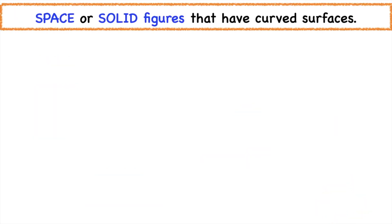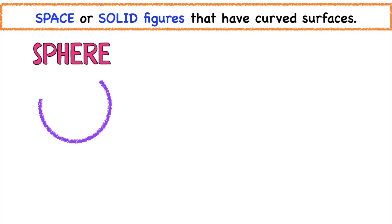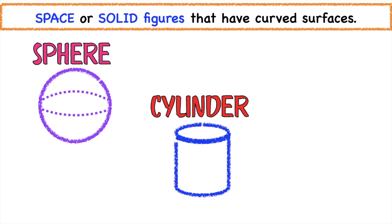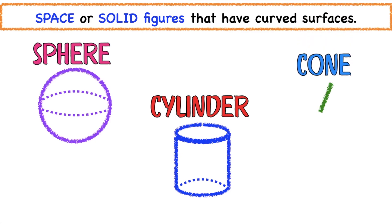Now let's proceed to those space or solid figures that have curved surfaces. We have sphere, cylinder, and cone.